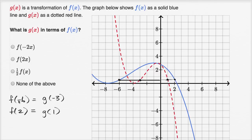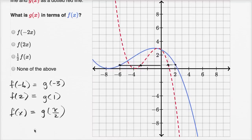In general, for a given x, f(x) is equal to g of x over two. Or if you think of it the other way, g(x) is going to be f of twice that, so f of 2x.